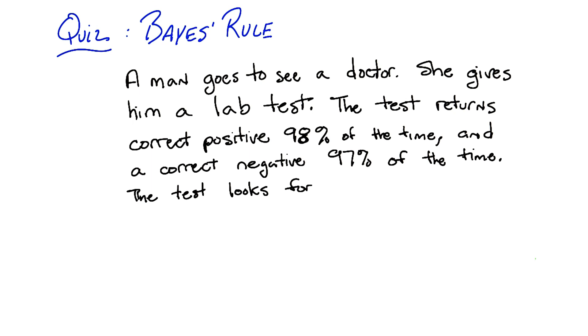And at the same time, it will return a correct negative, that is, if you don't have what the lab test is testing for, it will say you don't have it 97% of the time. So it has a false negative rate of only 3%. Wait, hang on.